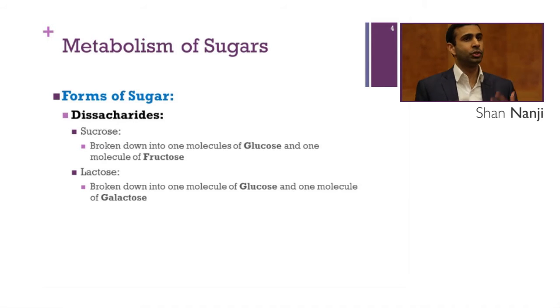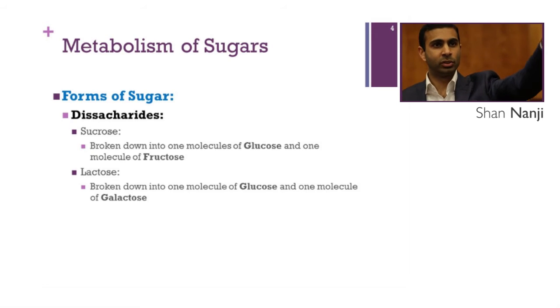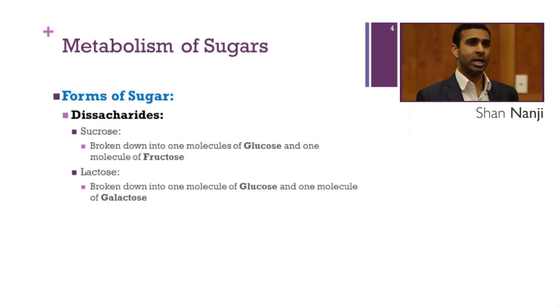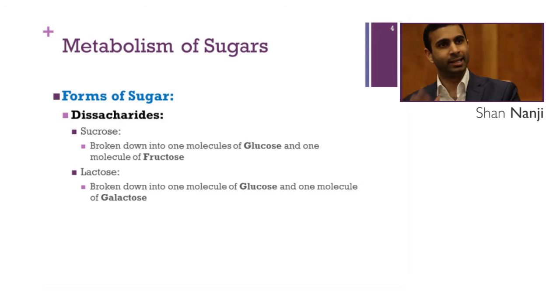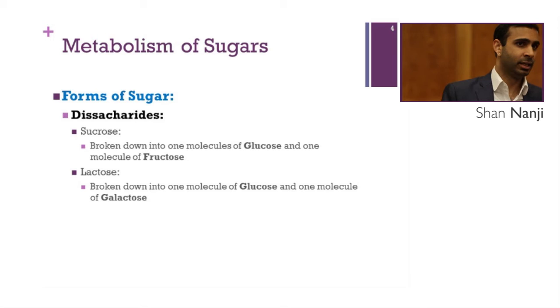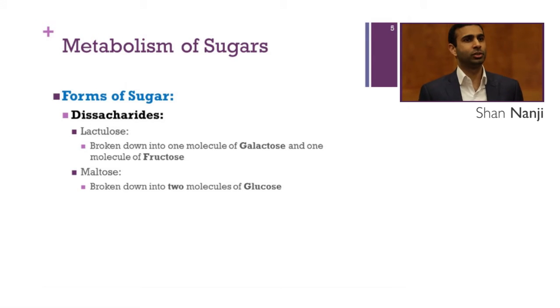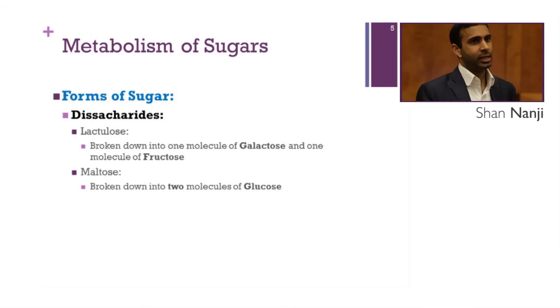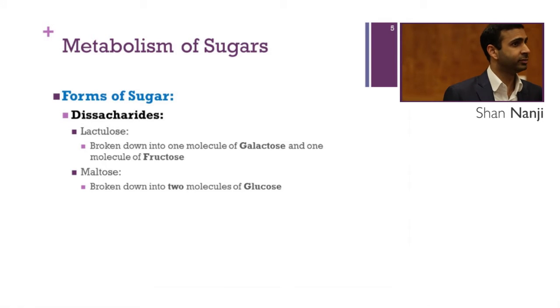Now let's talk about disaccharides. Sucrose is broken down into one molecule of glucose and one molecule of fructose. Lactose is broken down into one molecule of glucose and one molecule of galactose. Lactulose is broken down into one molecule of galactose and one molecule of fructose. And maltose is broken down into two molecules of glucose. So to recap: monosaccharides include glucose, fructose, and galactose; disaccharides include sucrose, lactose, lactulose, and maltose.